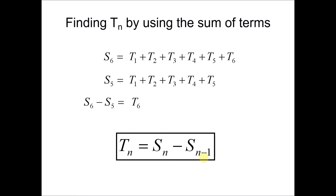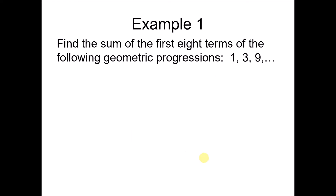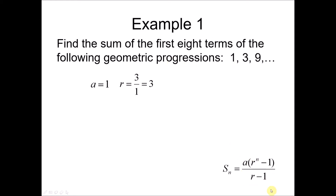Example 1: Find the sum of the first 8 terms of the geometric progression. The first term a is 1, and the common ratio r is 3 over 1, which equals 3. Since 3 is greater than 1, we use the second formula. With n equals 8, a equals 1, and r equals 3, we substitute into the formula and use a calculator to get the answer.